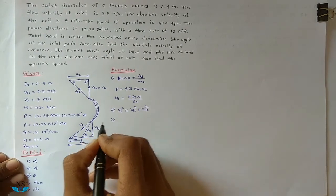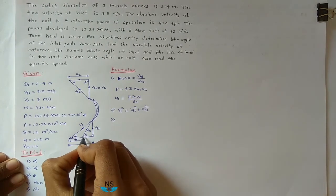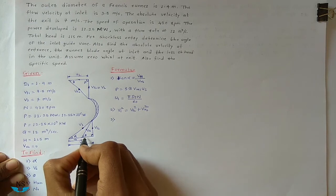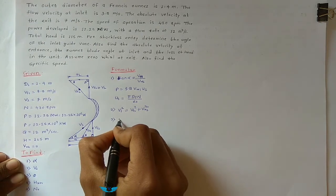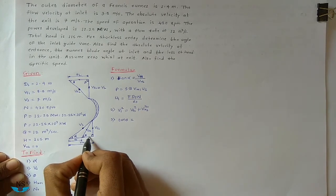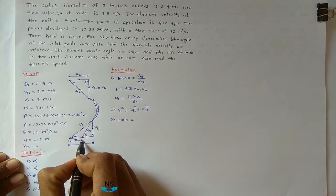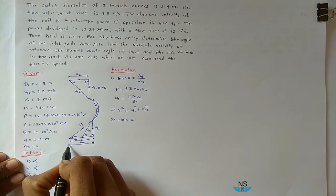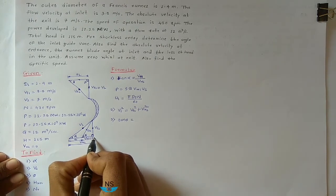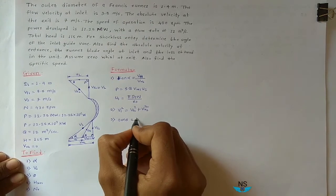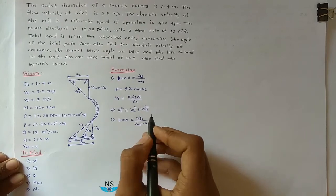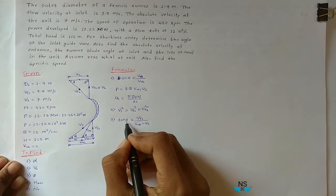For Theta, the Runner Blade Angle at Inlet, from the inlet velocity triangle: tan(Theta) = Vf1 / (Vw1 − U1). We know Vf1, Vw1, and U1, so we can easily find Theta.